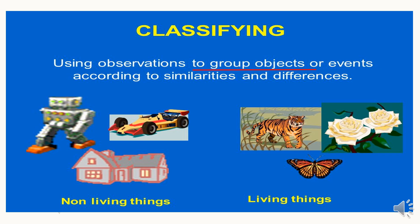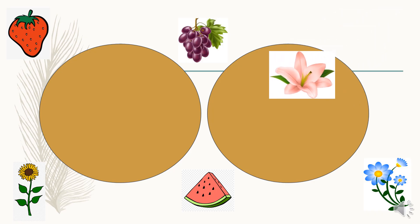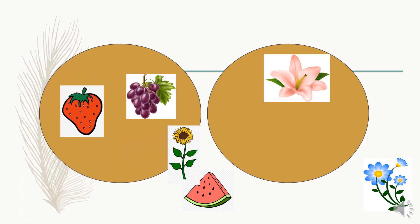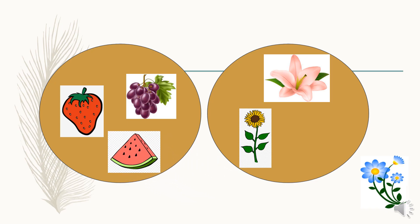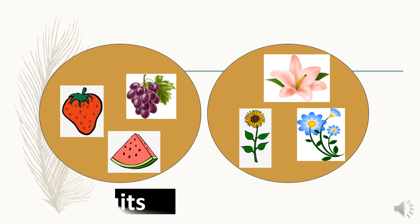In the living things group we have a tiger, a flower, and a butterfly. These are examples of grouping objects according to their similarities and differences. Let's try to classify more things according to their similarities. We have six objects in two circles. The grapes go on the second circle, along with the strawberry, sunflower, watermelon, and blue flowers. The first circle contains all fruits — very good! The second circle contains all flowers — that's right!